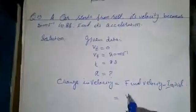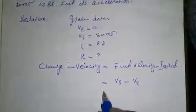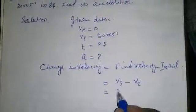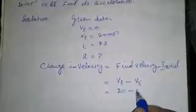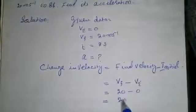Final velocity Vf minus initial velocity Vi, which is equal to 20 minus 0, which equals 20.